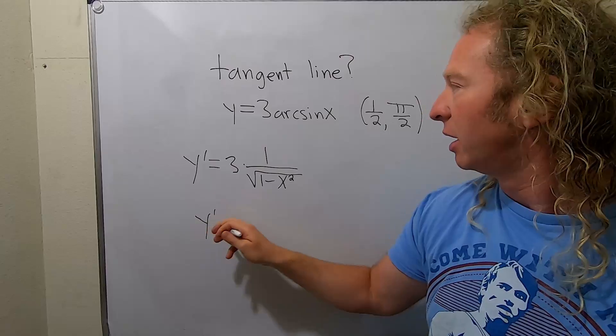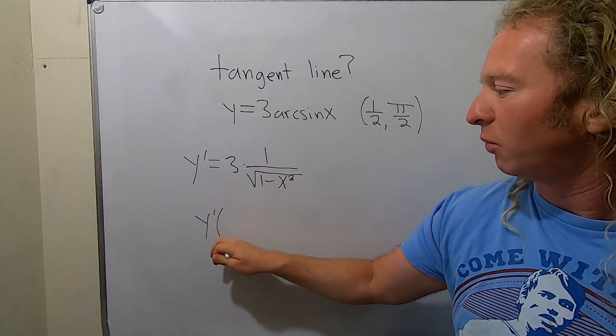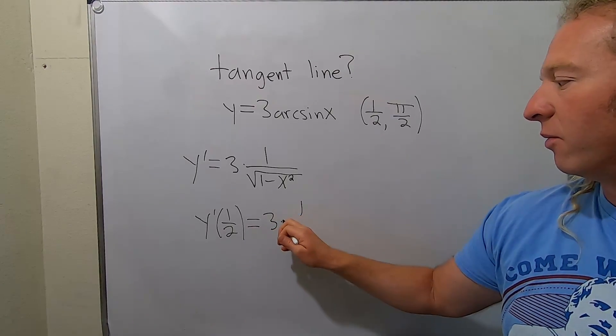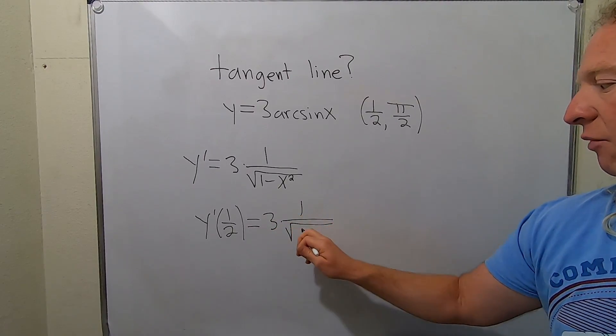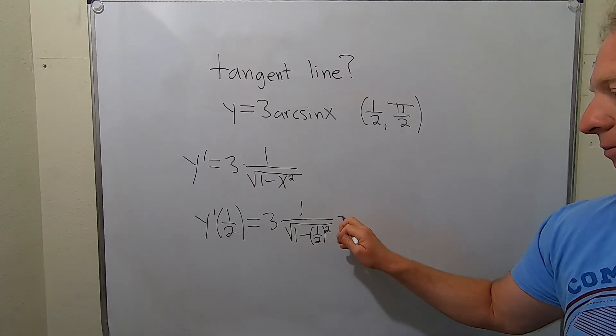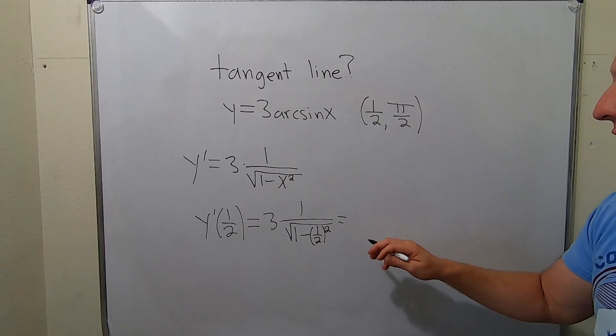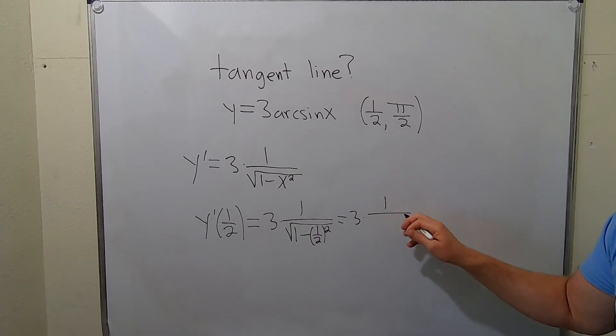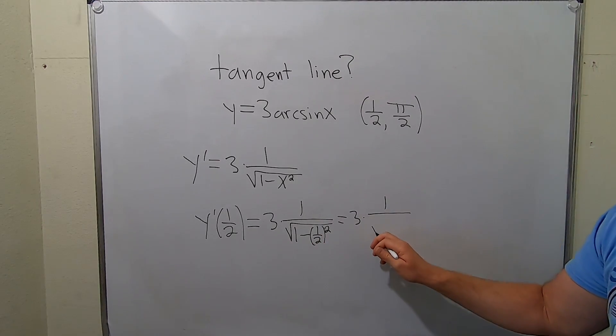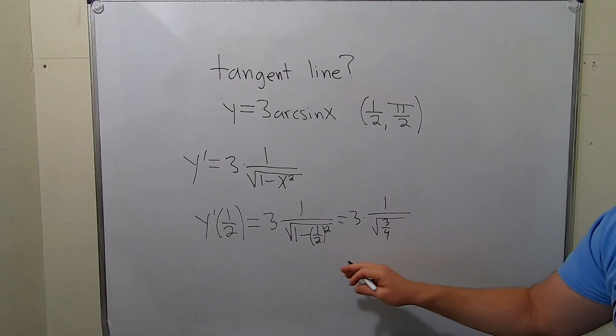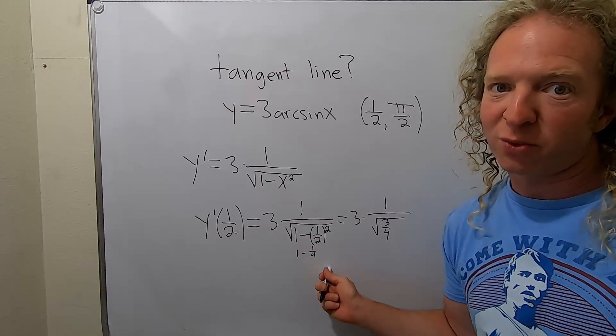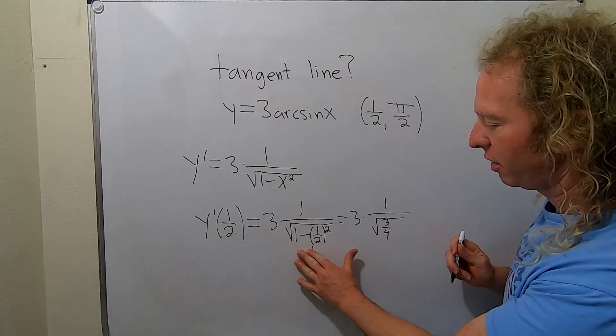So let's go ahead and plug in 1 half. We get 3 times 1 over the square root of 1 minus our x, which is 1 half, so 1 over 2 squared. Let's keep going and simplify this. This is 3 times 1 over, this is 1 minus 1 fourth. So 1 minus 1 fourth is 3 fourths. I'm skipping some steps here. 1 half squared is 1 fourth, 4 fourths minus 1 fourth is 3 fourths.